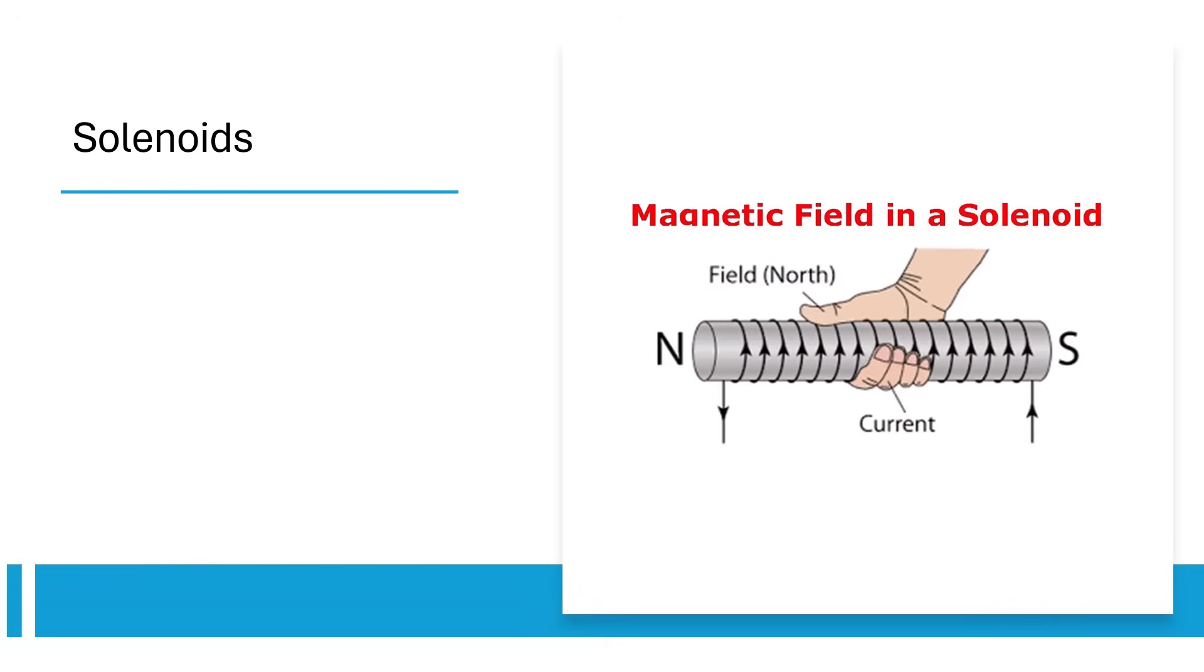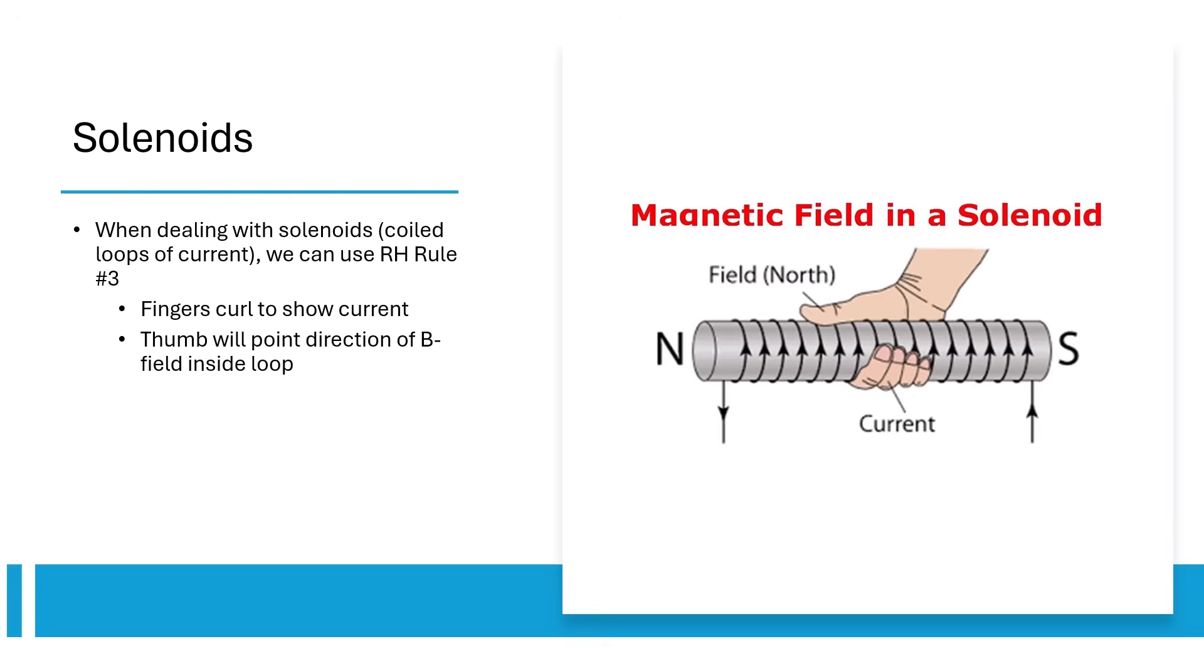Our last topic for this unit is solenoids. We have another right-hand rule for solenoids. Curl your fingers in the direction of current, and your thumb points toward the north end of the solenoid, or towards the B-field inside the solenoid. Be careful because the B-field outside the solenoid is different. B-field lines outside the solenoid point from north to south.